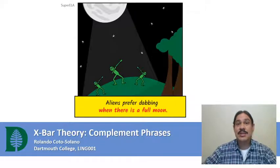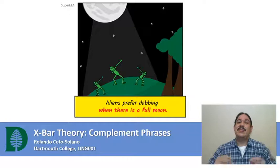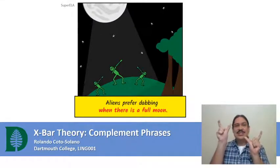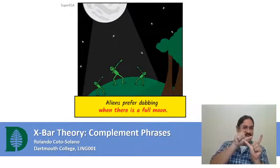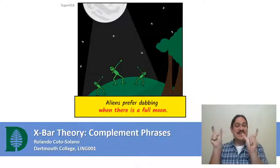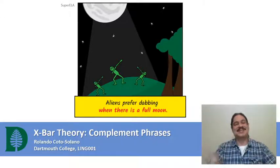In this video, we will look at a new type of phrase called a complement phrase. It will allow us to insert sentences into other sentences, like an alien's preferred dabbing when there is a full moon.